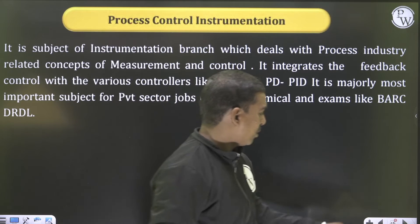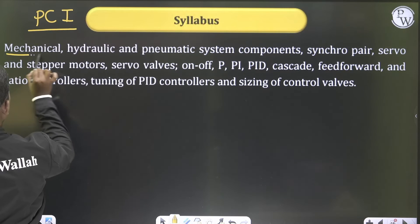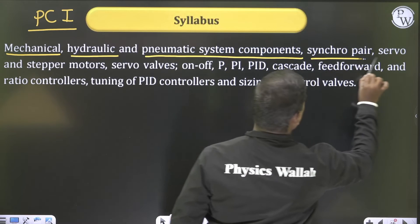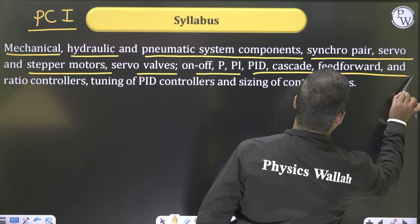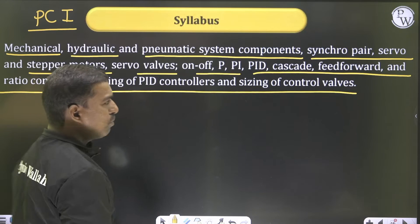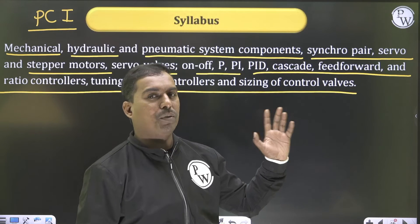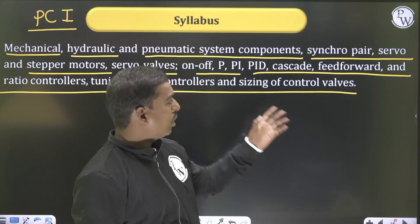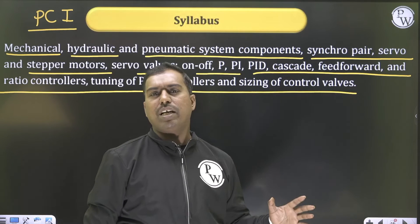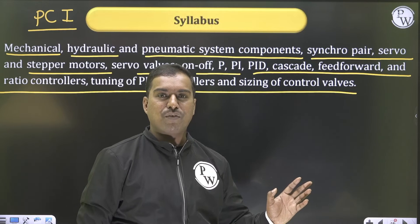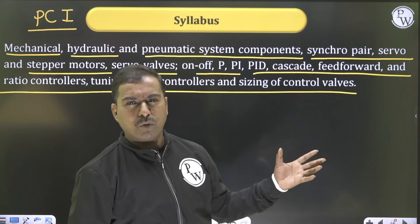The process control instrumentation syllabus includes: mechanical, hydraulic, and pneumatic system components; synchro pairs; servo and stepper motors; servo valves; on/off, PI, and PID controllers and control valves. This subject is more accessible to mechanical students since they have studied hydraulic and pneumatic components and have some idea about valve and actuator mechanisms. However, questions in this area are very limited — mostly from control system basics like the Ziegler-Nichols method and types of controllers.